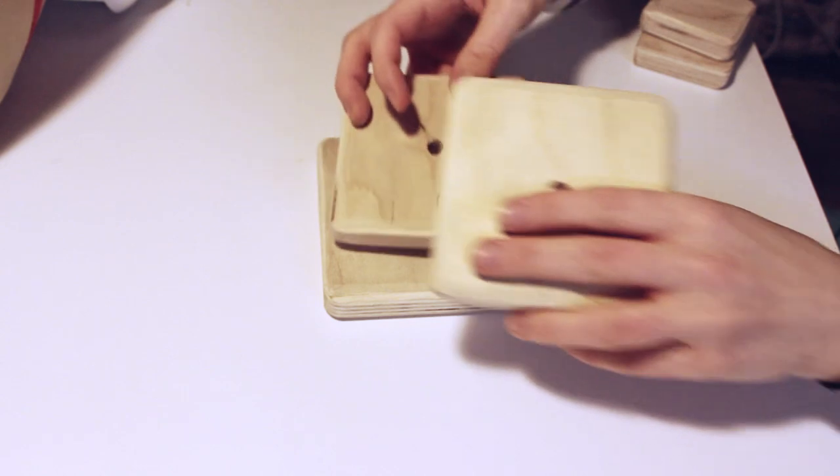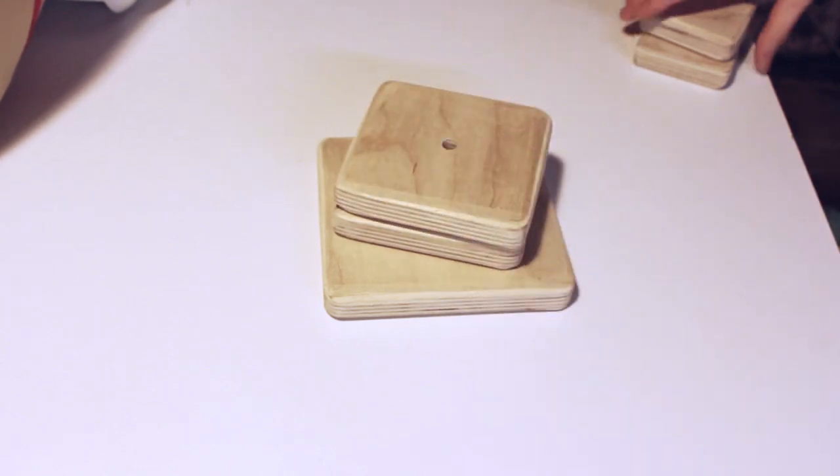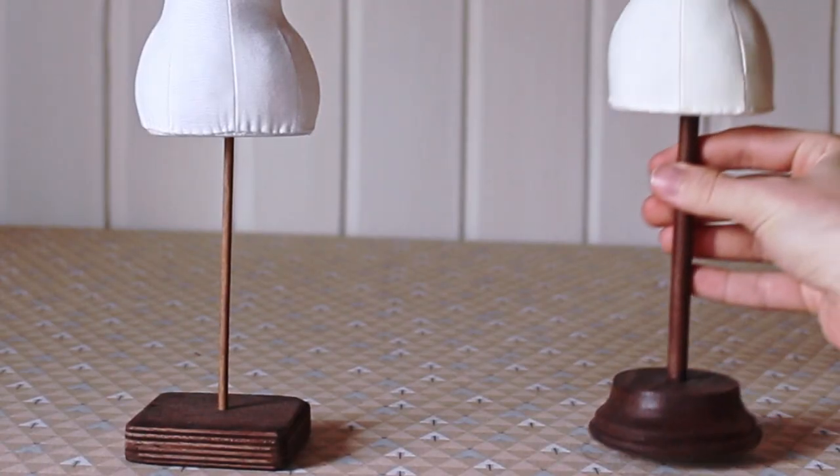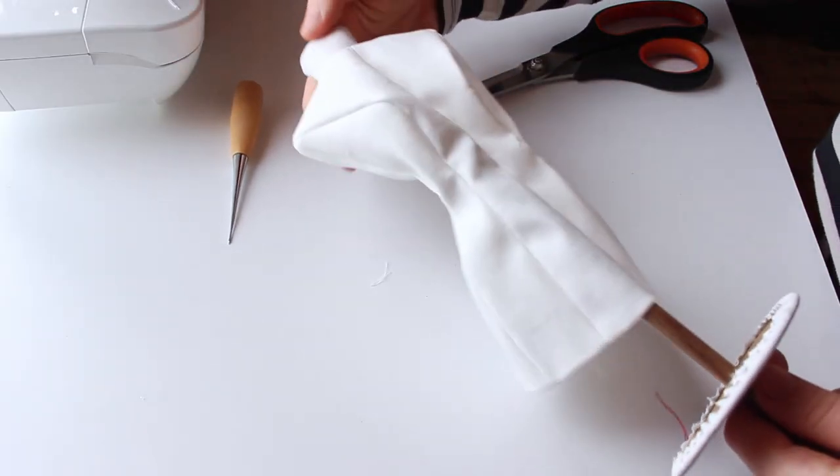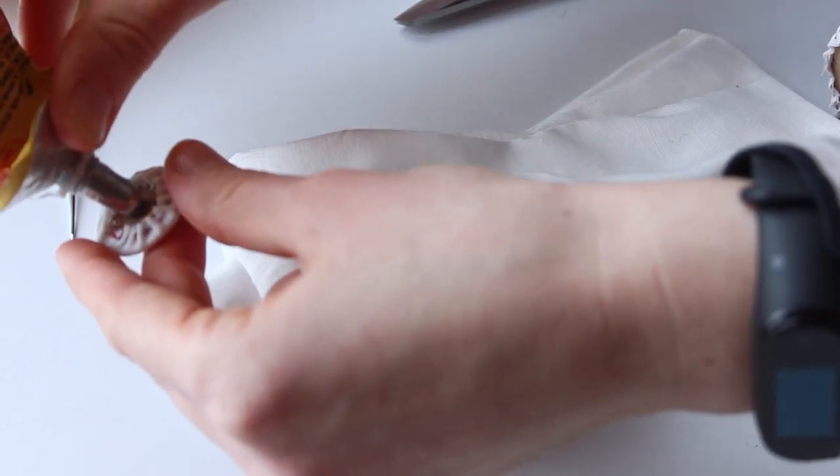Here I use a stand that I made myself from plywood, but you can also buy a previous stand like this one. Place the dress form on the stand and glue the neck top to the end of the dowel.